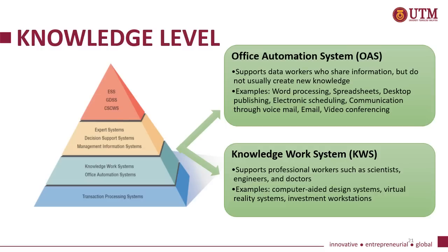At the knowledge level, we have two main systems. The first is the office automation system, which supports data workers who share information but do not usually create new knowledge. For example, word processing, spreadsheets, desktop publishing, electronic scheduling, and communication through voicemail, email, and videoconferencing. The second is the knowledge work system, which supports professional workers such as scientists, engineers, and doctors. For example, computer-aided design systems, virtual reality systems, and investment workstations.